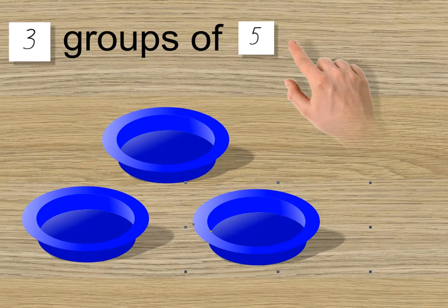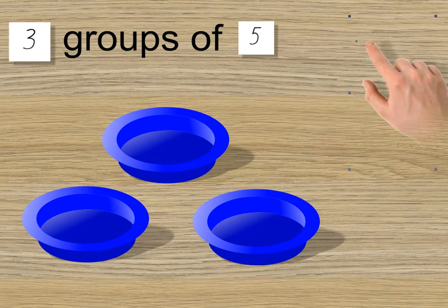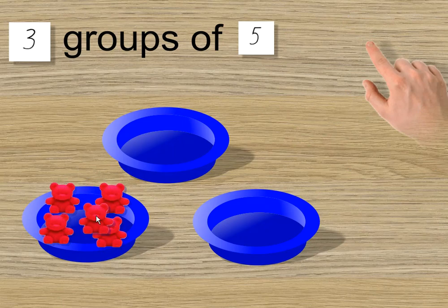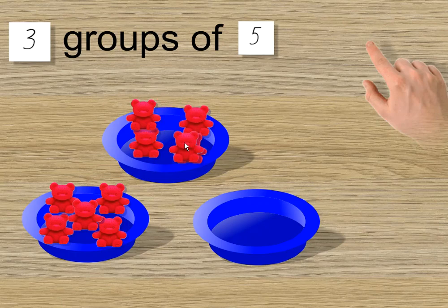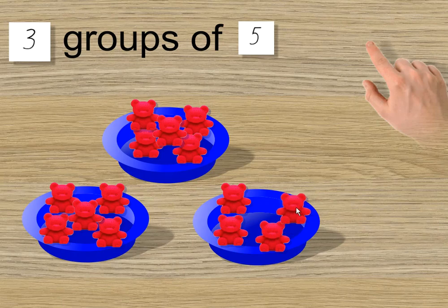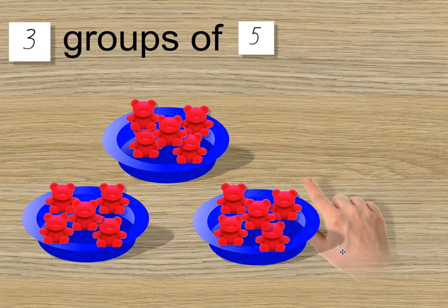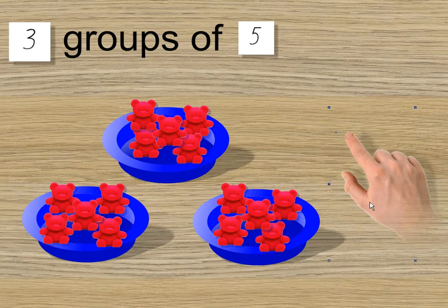Three. One, two, three. And how many in each group? Well, it says here, five. One, two, three, four, five. They have to be the same size for multiplication. There we are. Three groups of five. There are five teddies in each group, or in each bowl in this case.